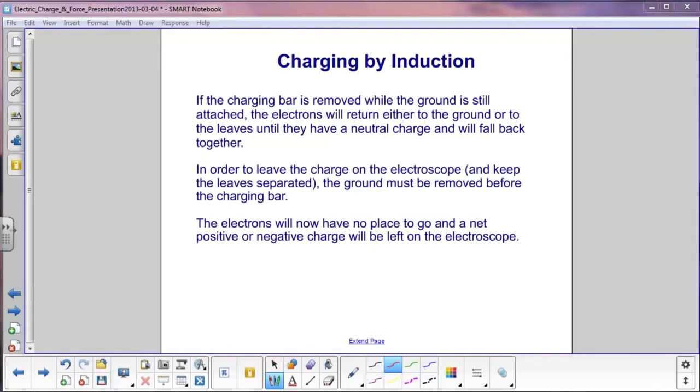If you want to leave the charge on the electroscope, which also keeps the leaves separated, the ground must be removed before the charging bar. Now, the electrons have nowhere to go, and you will leave a net positive or negative charge on the electroscope. Now, in this case, if you use a positive rod in induction, what you get at the end is a negatively charged electroscope.